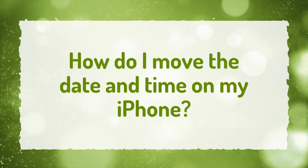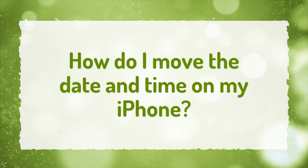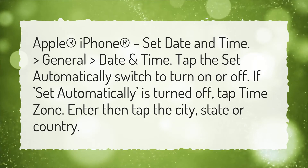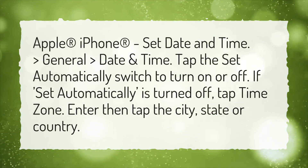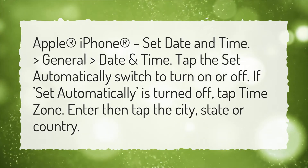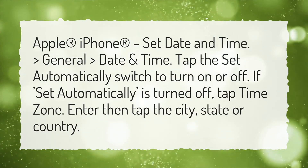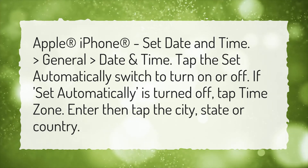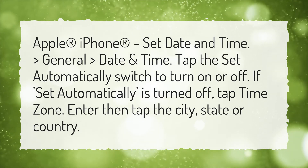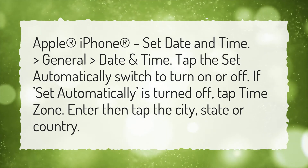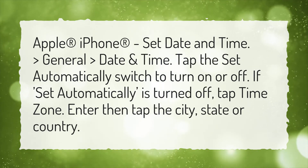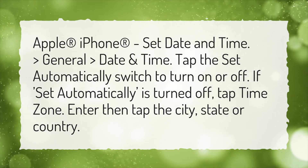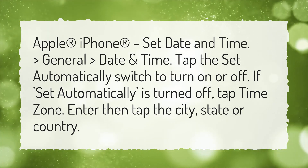How do I move the date and time on my iPhone? Apple iPhone set date and time: go to General, then Date and Time. Tap the Set Automatically switch to turn on or off. If Set Automatically is turned off, tap Time Zone, then enter and tap the city, state, or country.